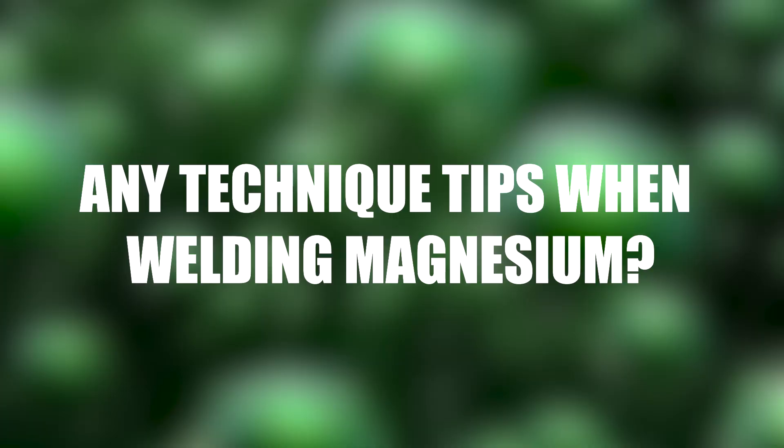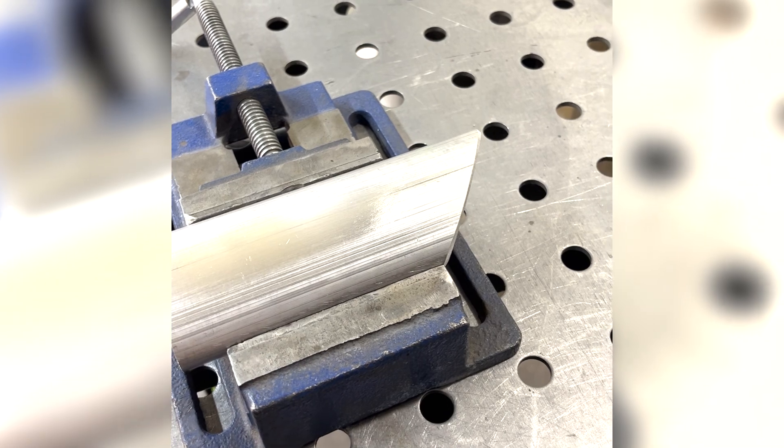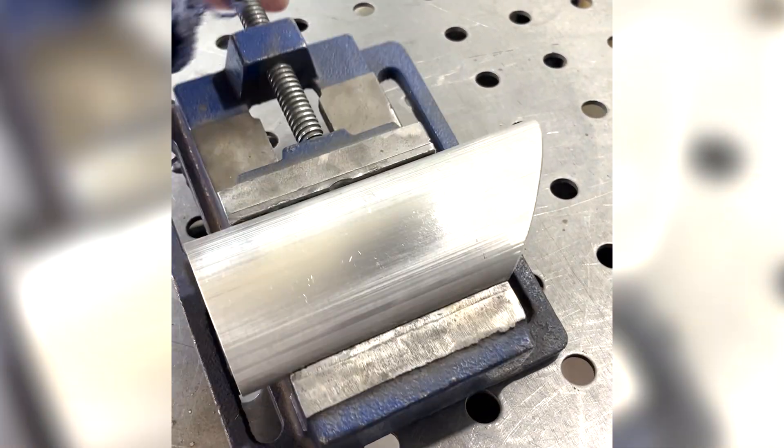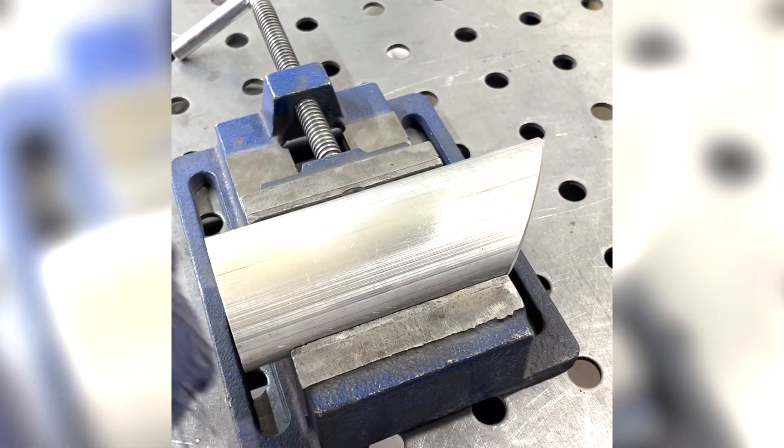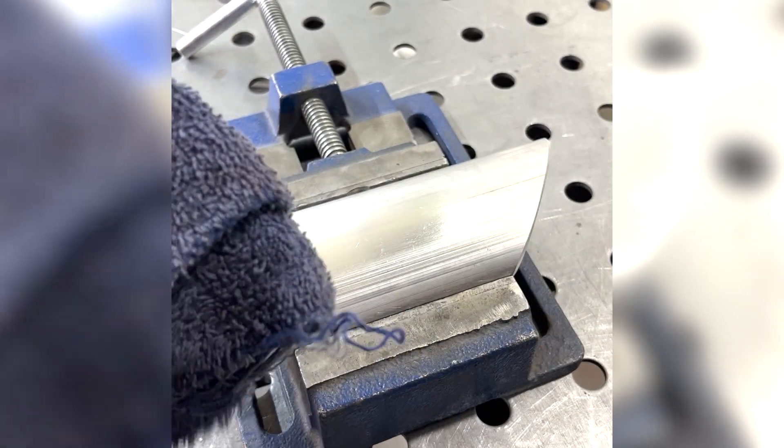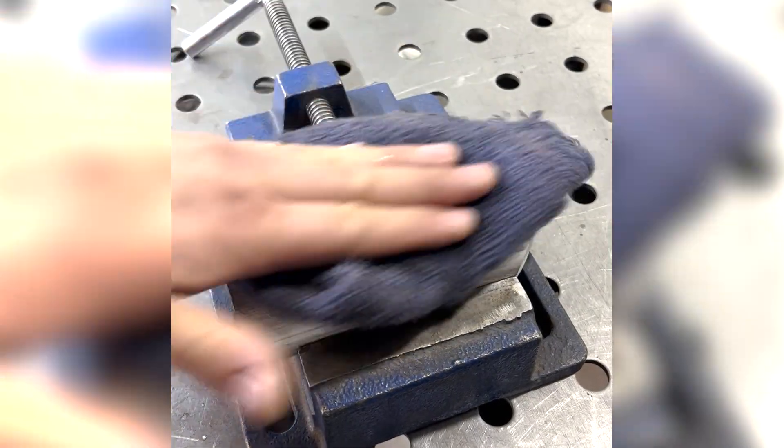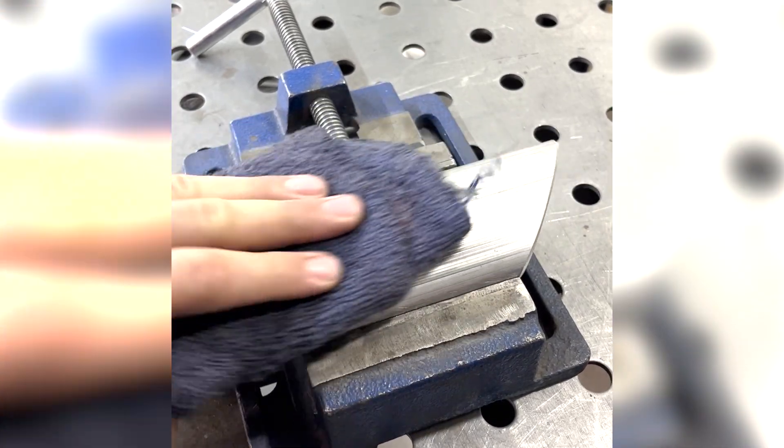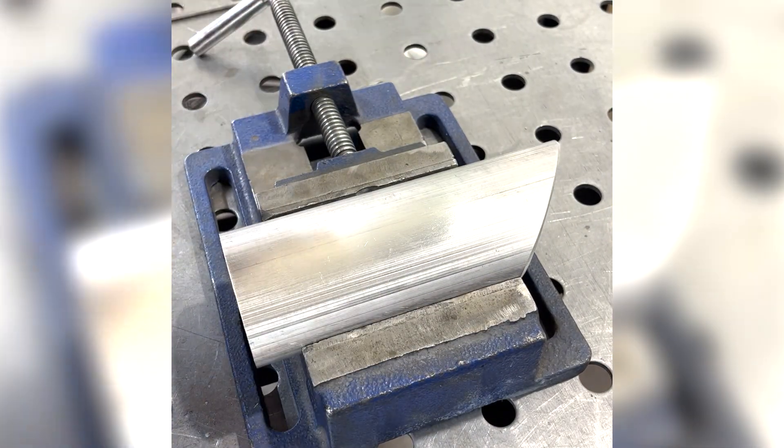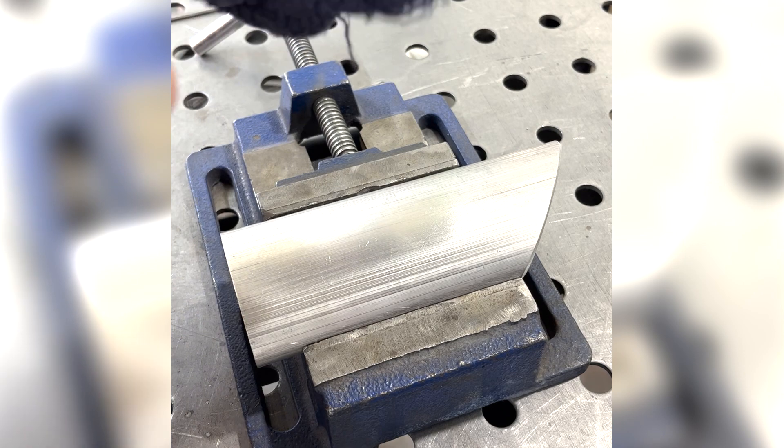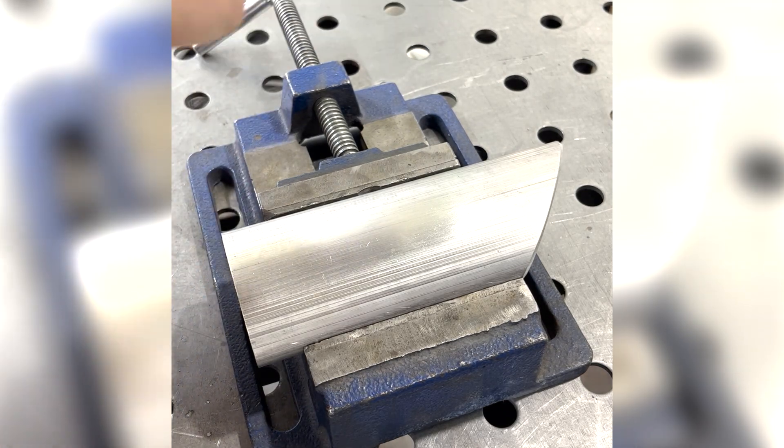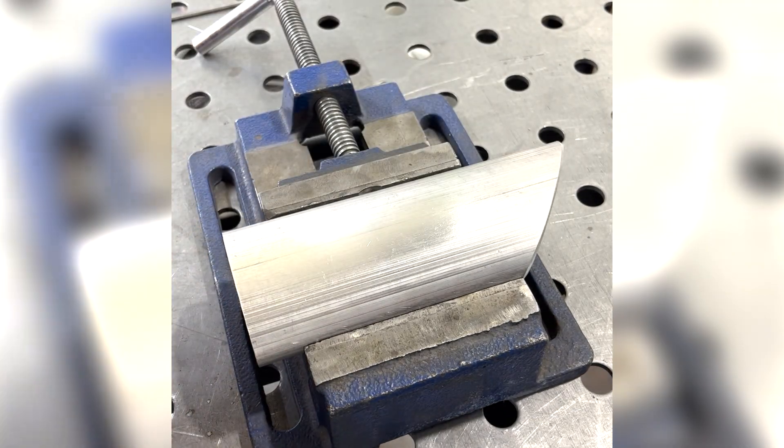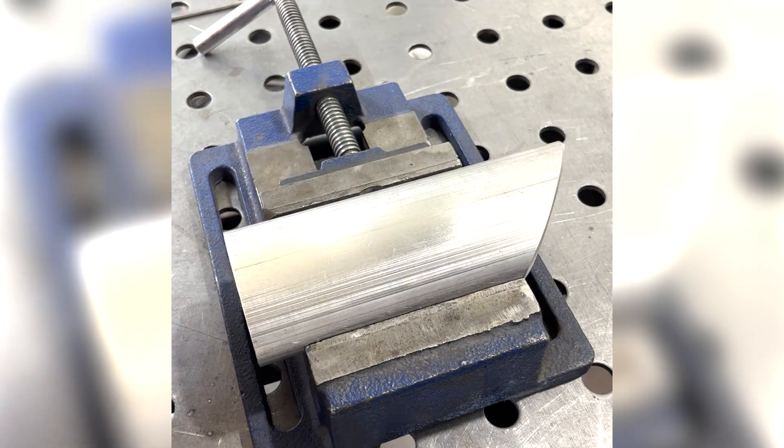Alright guys, I'm gonna go ahead and weld this up. This is the brush side, so I'll weld this side first, weld the other after. Acetone we're using here to clean it off real good. Same filler. Let's get some welding going.